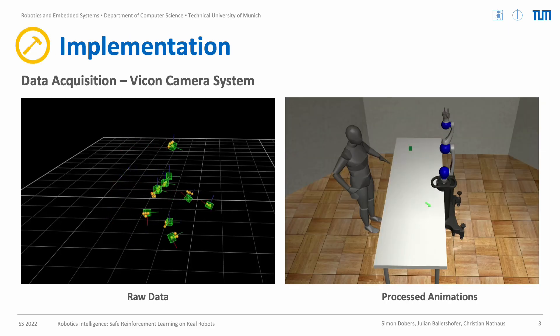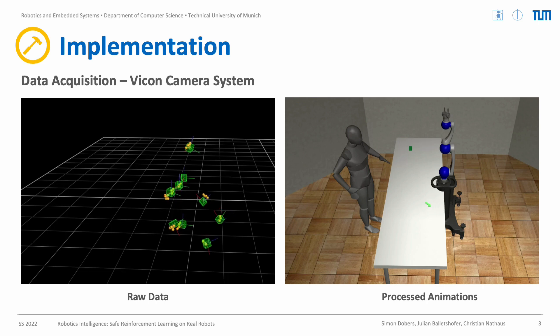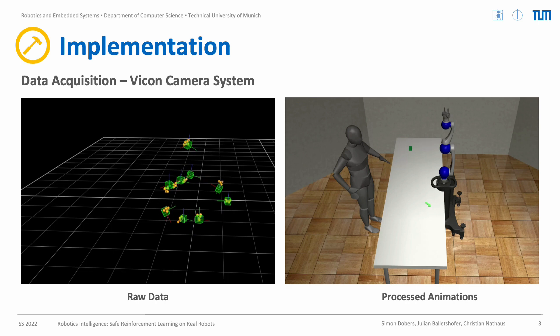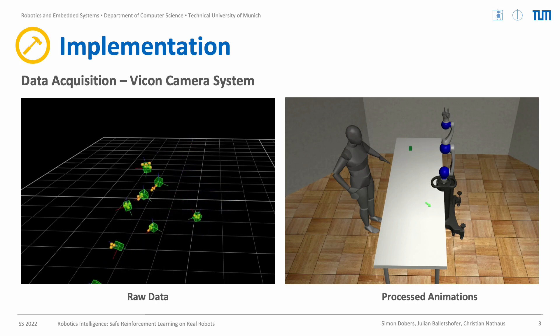To train a reinforcement learning agent which learns to safely interact with the human and work close to it, we have to train the agent with human motions together.